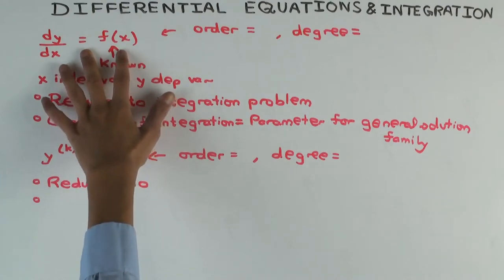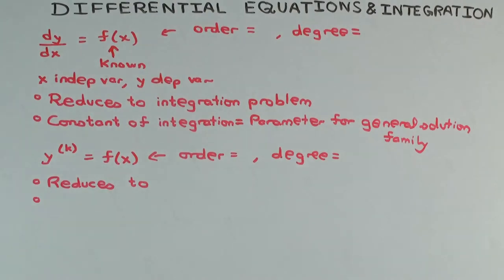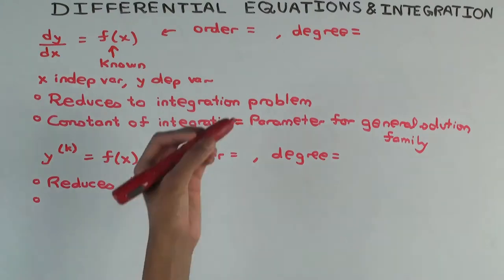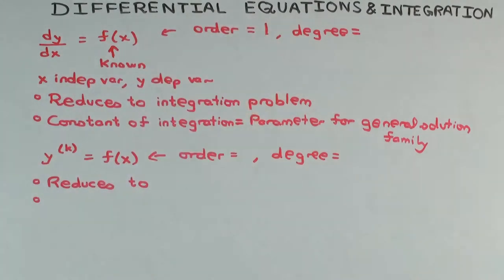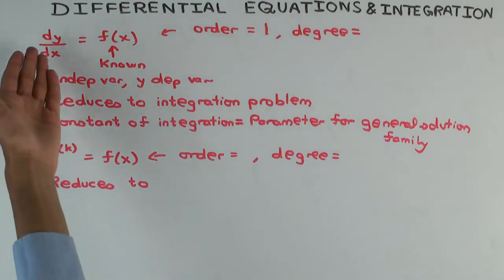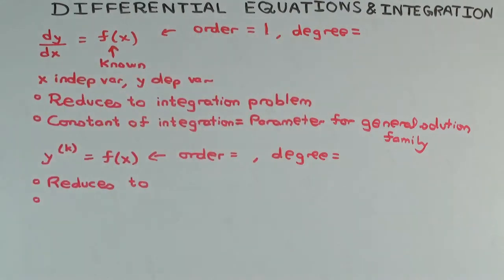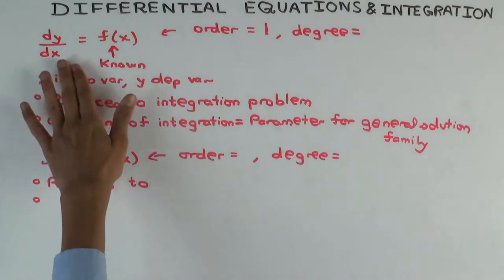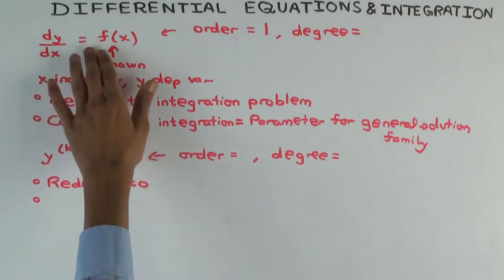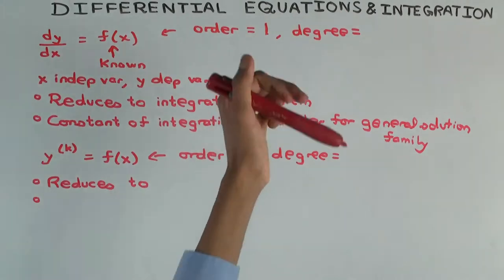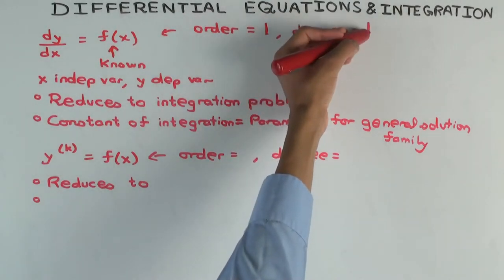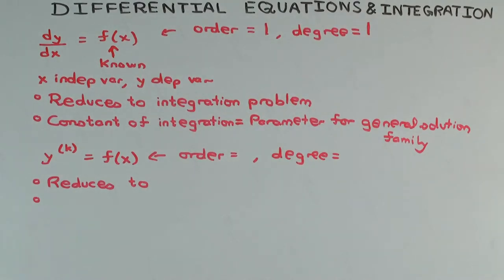I have to find the solutions for y as a function of x. Now before we go on, let's quickly note what the order and degree of this differential equation are. The order is 1 because you go only up to the first derivative — no higher order derivatives appear. The degree is also 1 because in terms of the first derivative it's linear; the first derivative equals something.